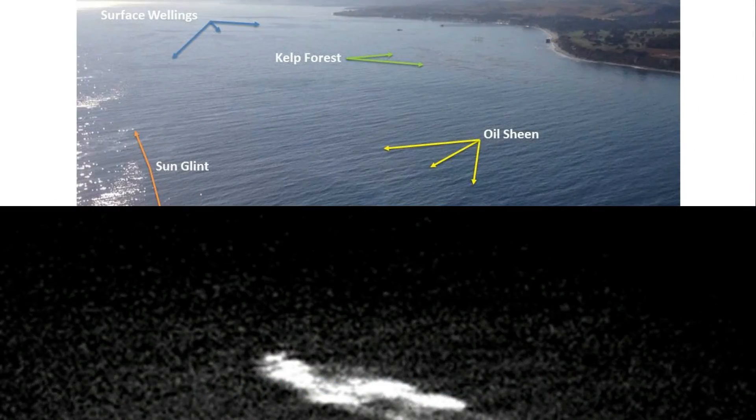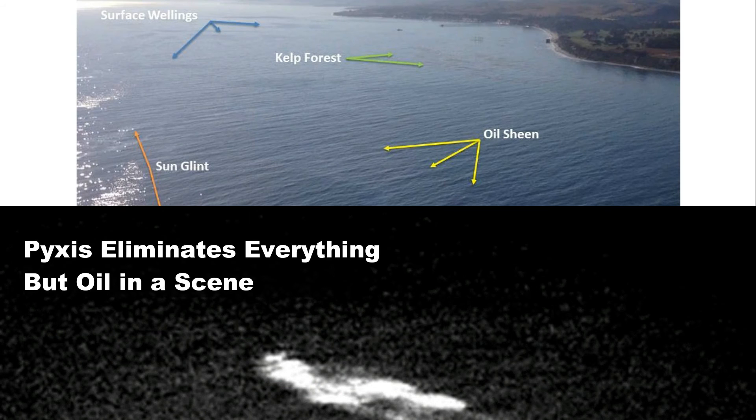Using polarization, Pixis can distinguish oil from land, sea kelp, and sun glint.